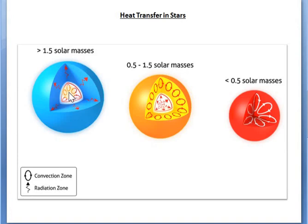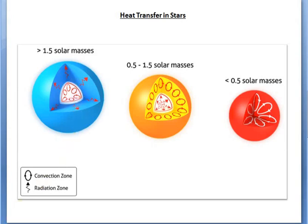Due to the strong temperature sensitivity of the CNO cycle, the temperature gradient in the inner portion of the star is steep enough to make the core convective. In the outer portion of the star, the temperature gradient is shallower, although the temperature is high enough that hydrogen is nearly fully ionized, so the star remains transparent to ultraviolet radiation. As a result, massive stars have convective cores and radiative envelopes.